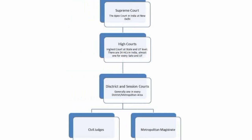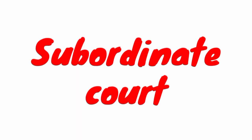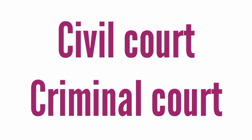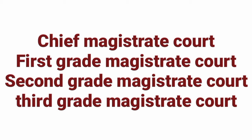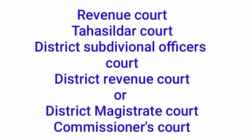The stages of the judicial system are: Supreme Court, State High Court, District and Session Court, Senior Division Court, Civil Court, Chief Judicial Magistrate in criminal cases, Subordinate Court, Chief Magistrate Court, First Grade Magistrate Court, Second Grade Magistrate Court, and Third Grade Magistrate Court. For revenue courts: Tasildar Court, District Subdivisional Officials Court, District Revenue Court, District Magistrate Court, Commissioner's Court, and Revenue Board.